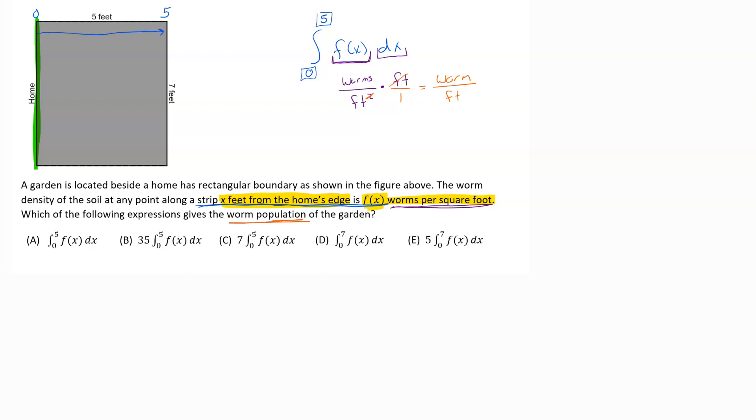What I want at the end of this is the worm population, so I want those units to be worms. I don't want a strip, I'm really looking to find the full area here. I need to multiply this by something that has just feet, because if I multiply by something that's just feet, my feet units will cancel out and I'll be left with just worms.